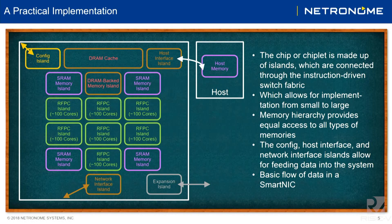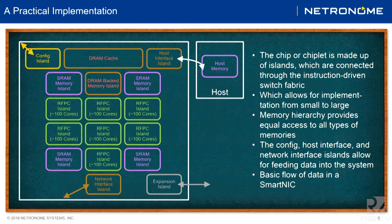The basic building blocks of our chips come in three types. One is how we get the data in and out of the chip — the I/O capability: network interfaces, PCIe, coherent buses like CXL or other coherent protocols, configuration buses, and host interface buses.